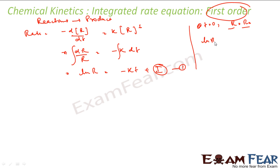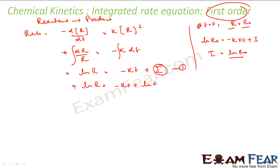Putting t = 0, R = R₀ into the equation: ln R₀ = minus k × 0 + I, so I = ln R₀. Substituting back: ln R = minus kt + ln R₀. Or I can write: ln(R/R₀) = minus kt.